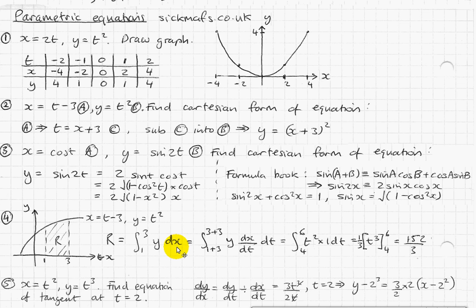So how do you replace the dx in terms of t? Well, you can convert, you can say dx is the same as dx by dt by dt. You can imagine it cancelling out. So that is the same as that.